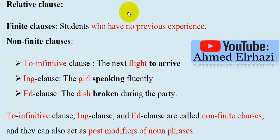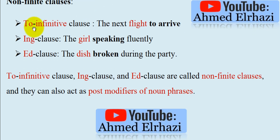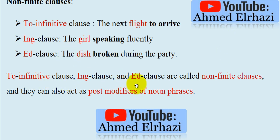Relative clauses come in two main types: finite clauses and non-finite clauses. Finite clauses take the form of a full relative clause, for example: students who have no previous experience — everything from 'who' to the end is a finite clause. Non-finite clauses require attention because we have three types: the to-infinitive clause, as in 'the next flight to arrive'; the -ing clause, as in 'the girl speaking fluently'; and the -ed clause, as in 'the dish broken during the party' — where -ed indicates a participle. These non-finite clauses can also act as post-modifiers of noun phrases.